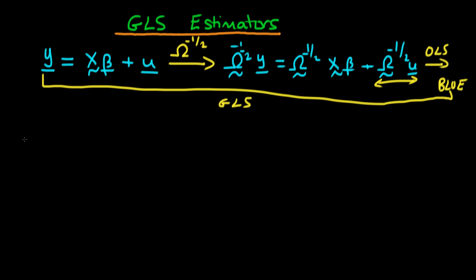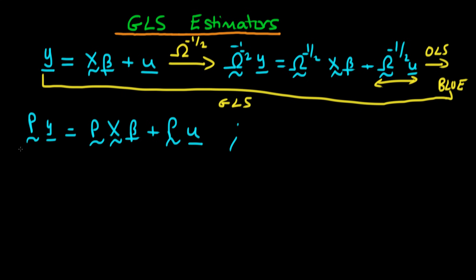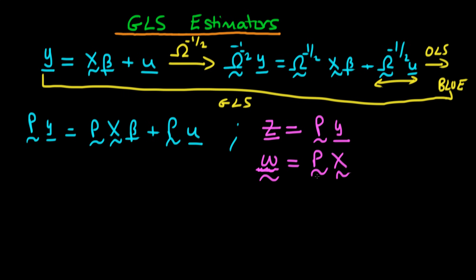I'm going to use the previous notation and call P = Ω^(-1/2), just because it's easier to write. So we have P·y = PXβ + Pu. Now let's rename the transformed variables: let z = Py (transformed dependent variable), let Ω̃ = PX (transformed independent variable — note the tilde since it's a matrix), and let ε = Pu (transformed error).